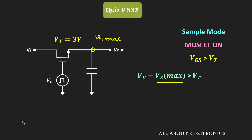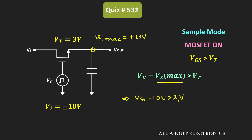The input voltage range is between ±10V, so the maximum value of the input voltage is +10V, and the same will be the maximum value of the source voltage. Therefore, VG - 10V should be more than 3V, or the gate voltage should be more than 13V. This means the minimum required gate voltage is VG_min = 13V.